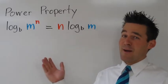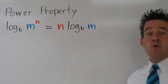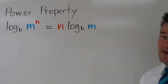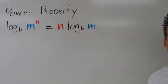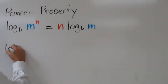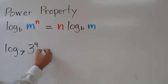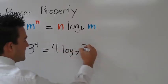This is the power property. If we have log base b of m raised to the n power, we can rewrite this as n times log base b of m. The exponent simply moves to the front of the log. Let's see an example. If we have log base 7 of 3 to the fourth power, we can rewrite this as 4 times log base 7 of 3.